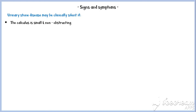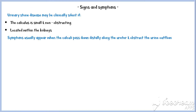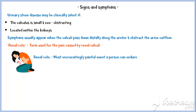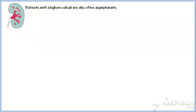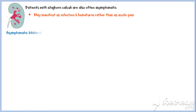Now let's discuss the signs and symptoms of urinary stone disease. Urinary stone disease may be clinically silent if the calculus is small and non-obstructing, or located within the kidneys. Symptoms usually appear when calculi pass distally along the ureter and obstruct urine outflow. Renal colic is the term used for the pain caused by renal calculi — it is probably the most excruciatingly painful event a person can endure, often described as worse than childbirth, broken bones, gunshot wounds, burns, or surgery. Patients with staghorn calculi are often asymptomatic and may manifest with infection and hematuria rather than acute pain. Asymptomatic bilateral obstruction, which is usually uncommon, manifests as symptoms of acute renal failure.